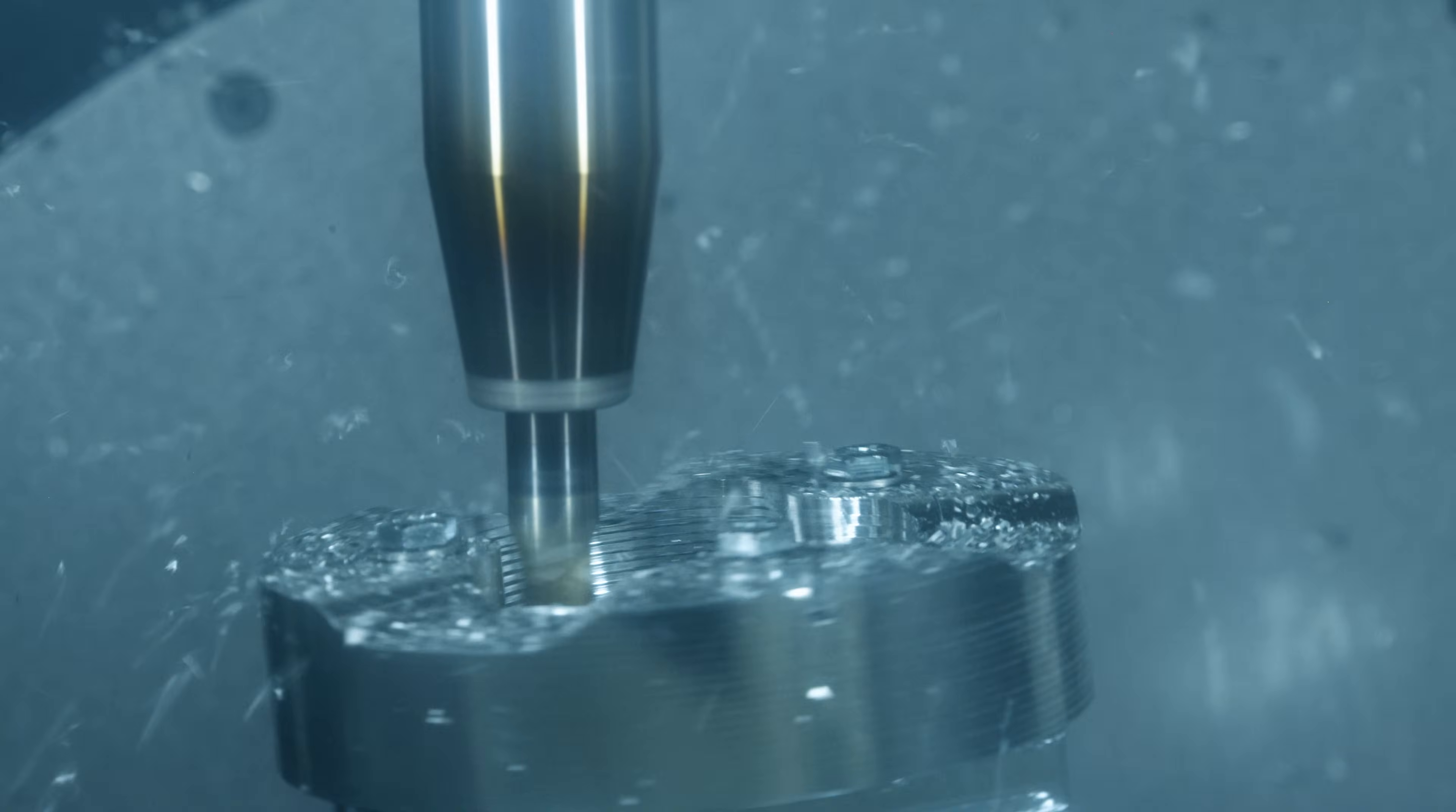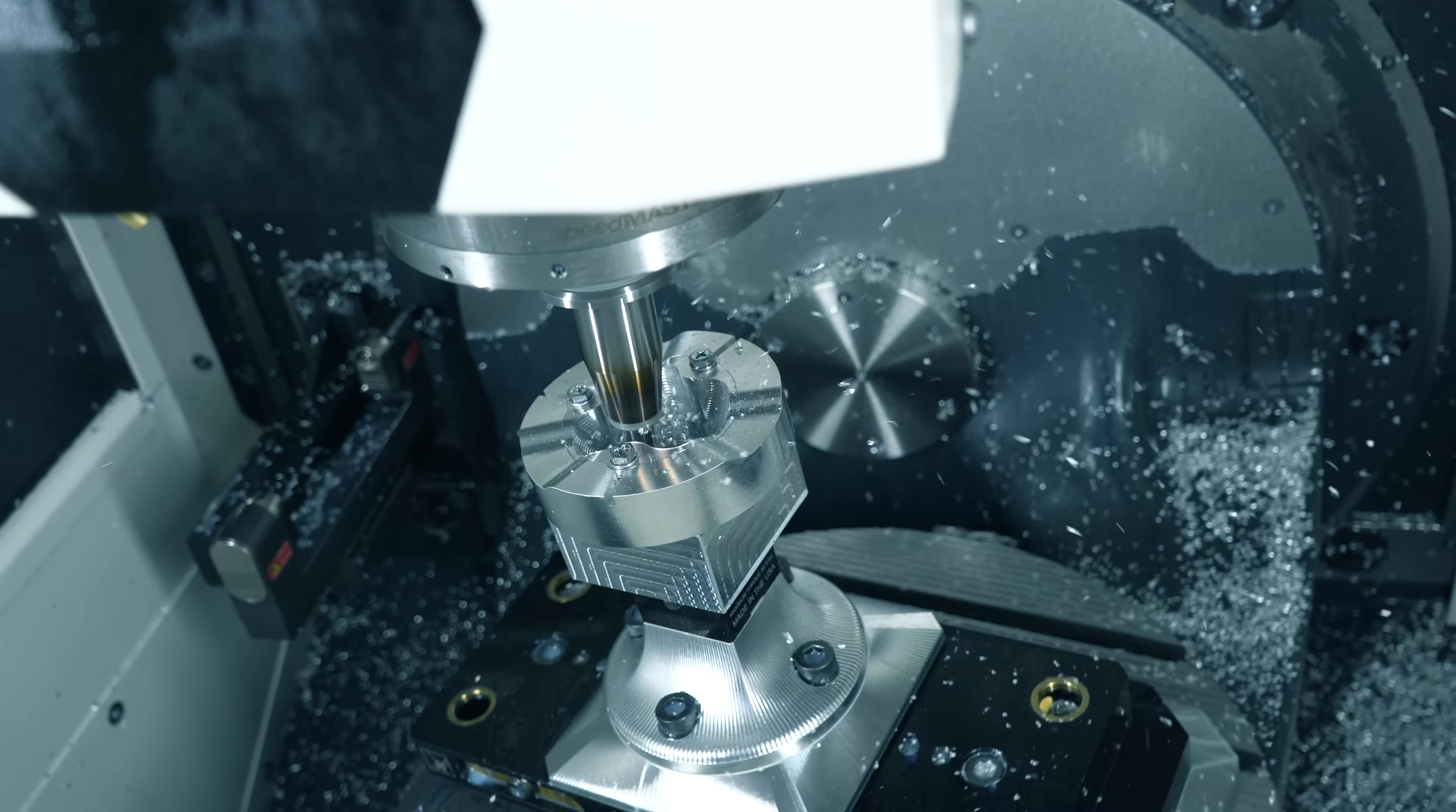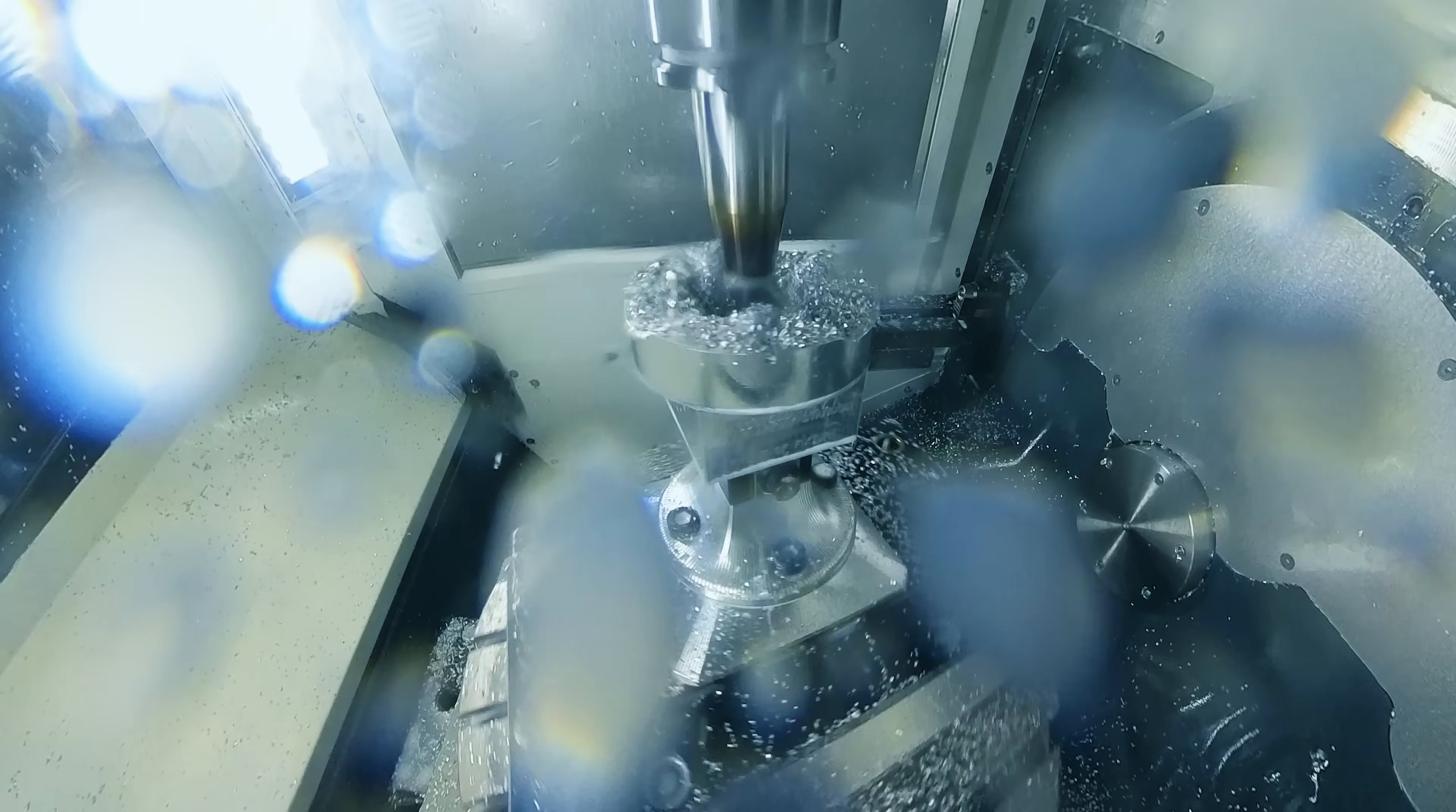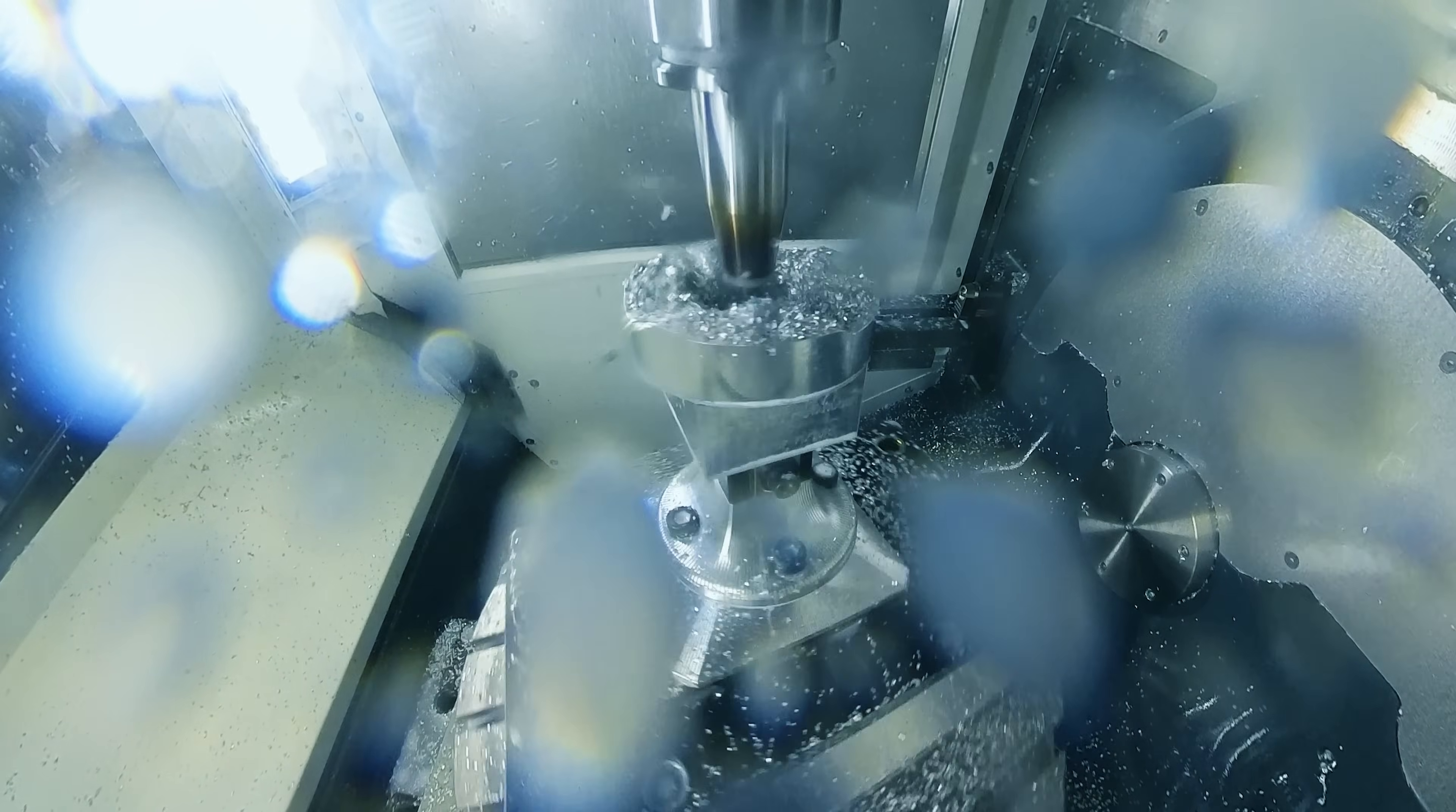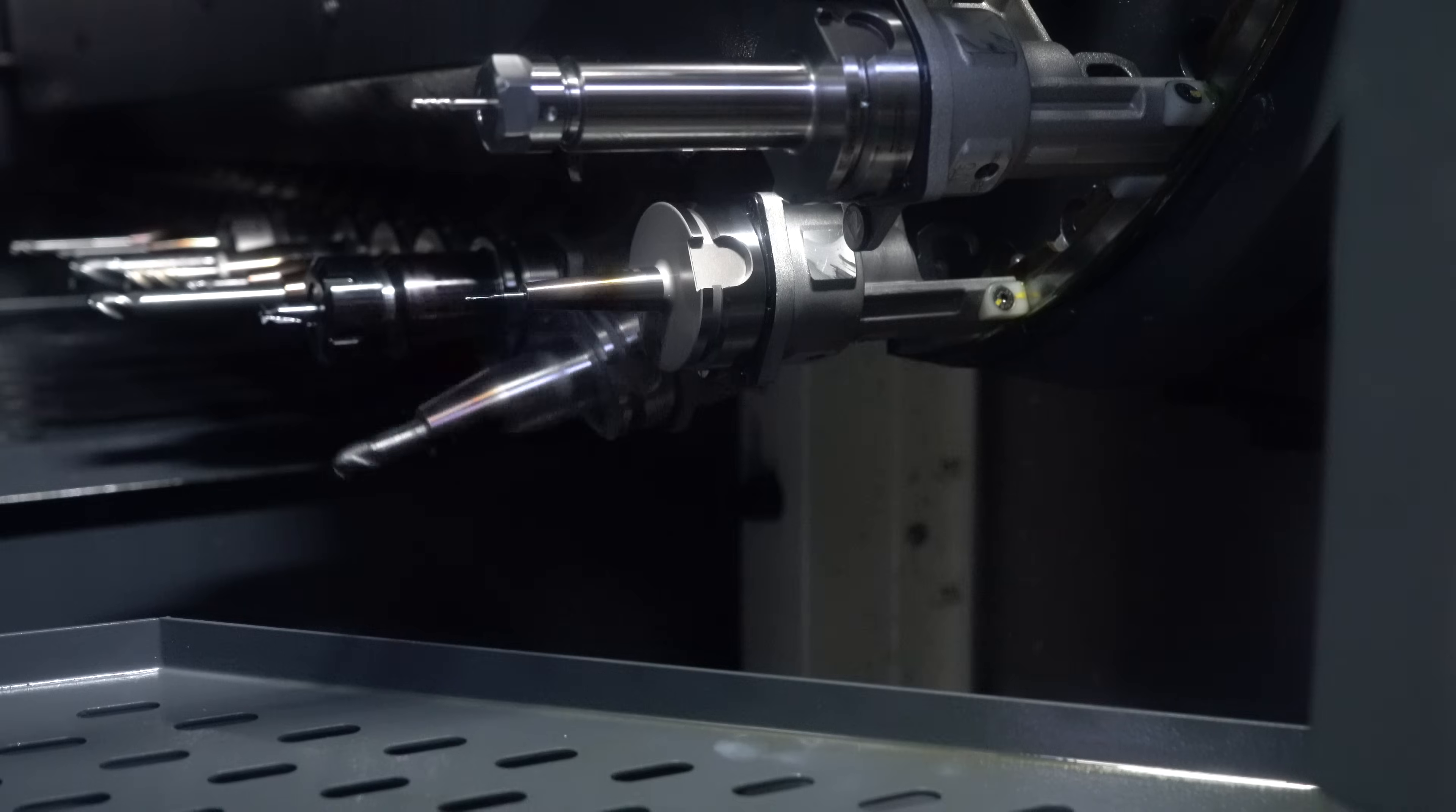After the initial roughing we jump into a five axis simultaneous semi-finishing pass. Still using the same tool but now leaving a consistent amount of stock for the finisher.